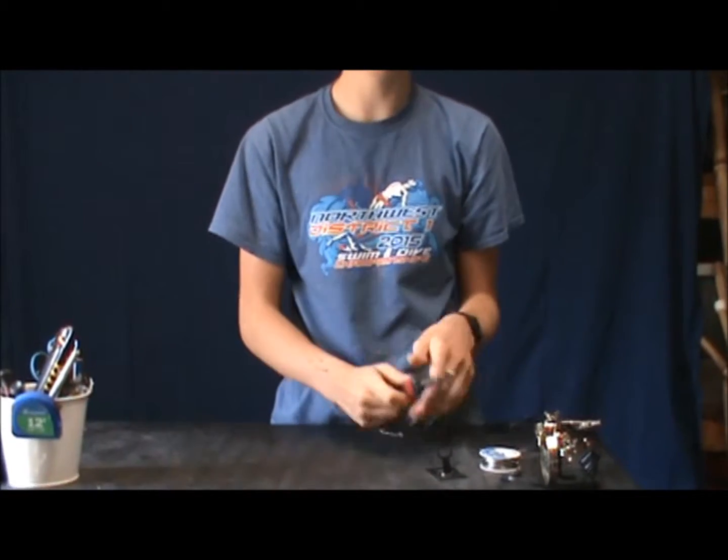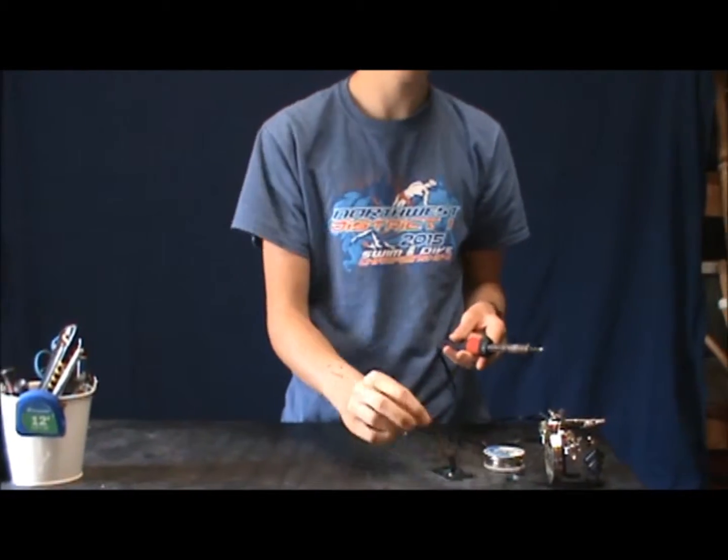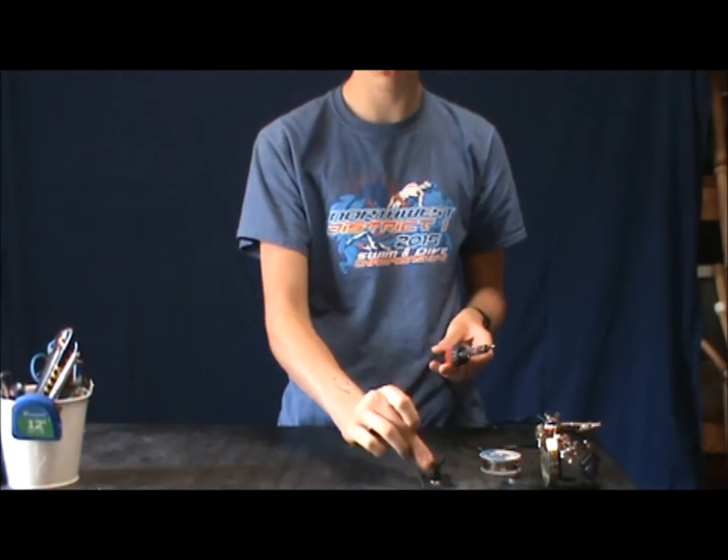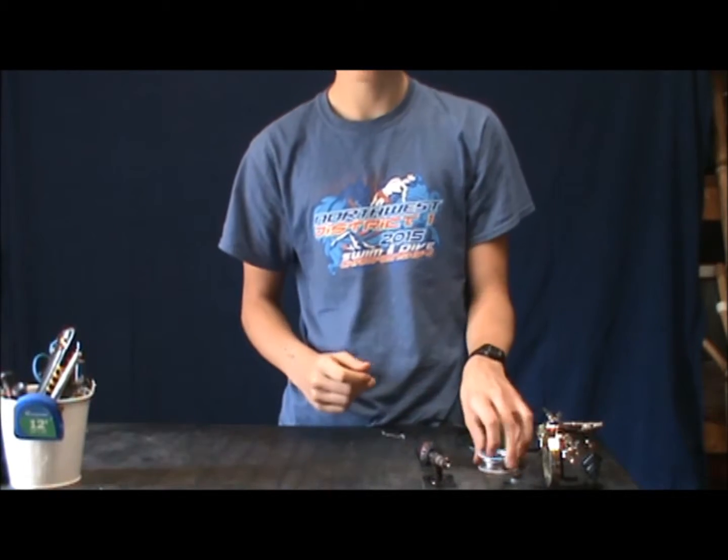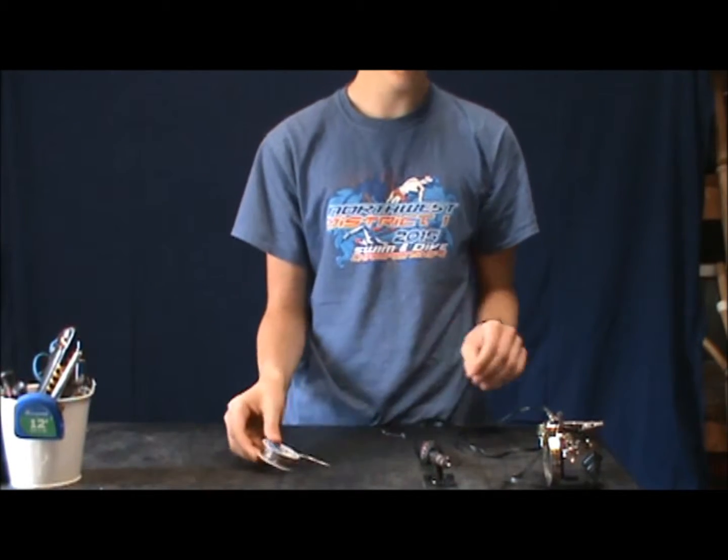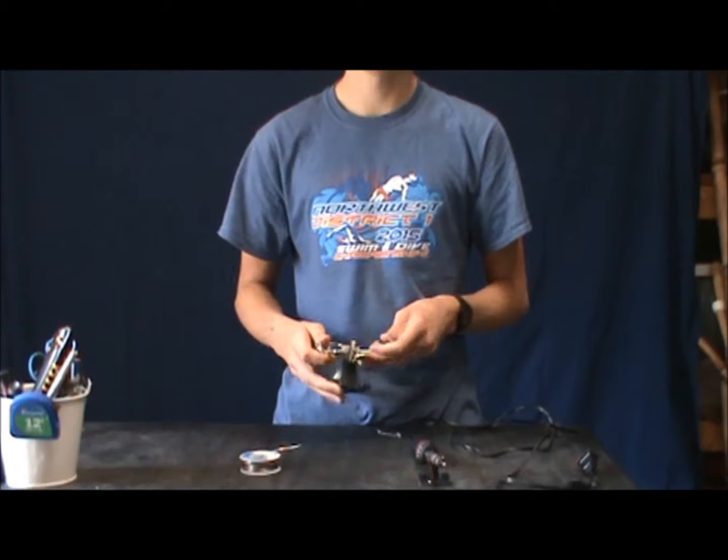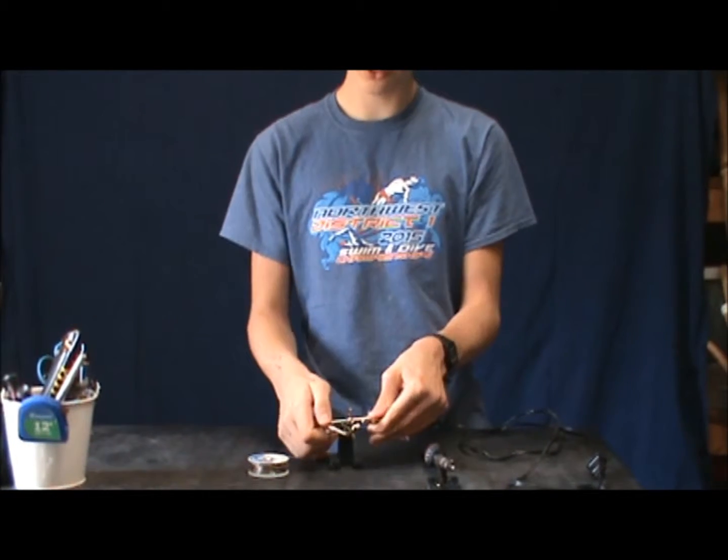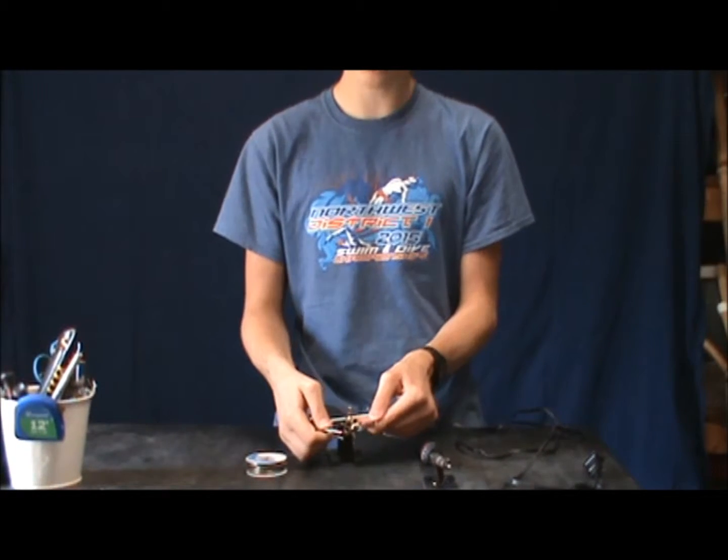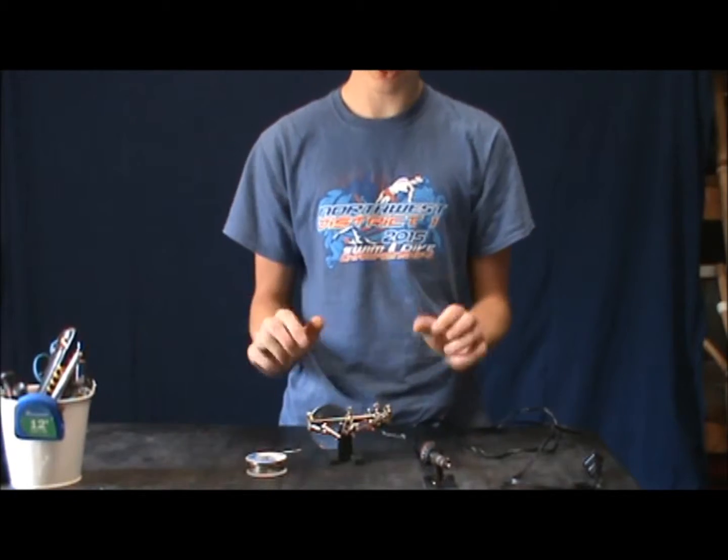So to solder, you'll need a soldering iron, a soldering stand so you don't burn or melt anything else, solder, and some helping hands. The helping hands are for if you can hold the two things you're going to solder together so you don't have to use your hands for those.